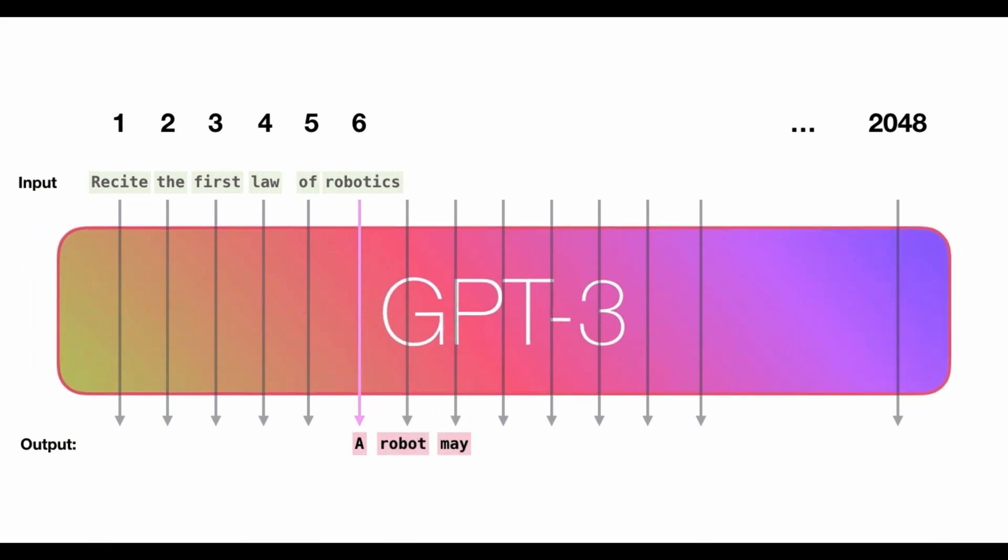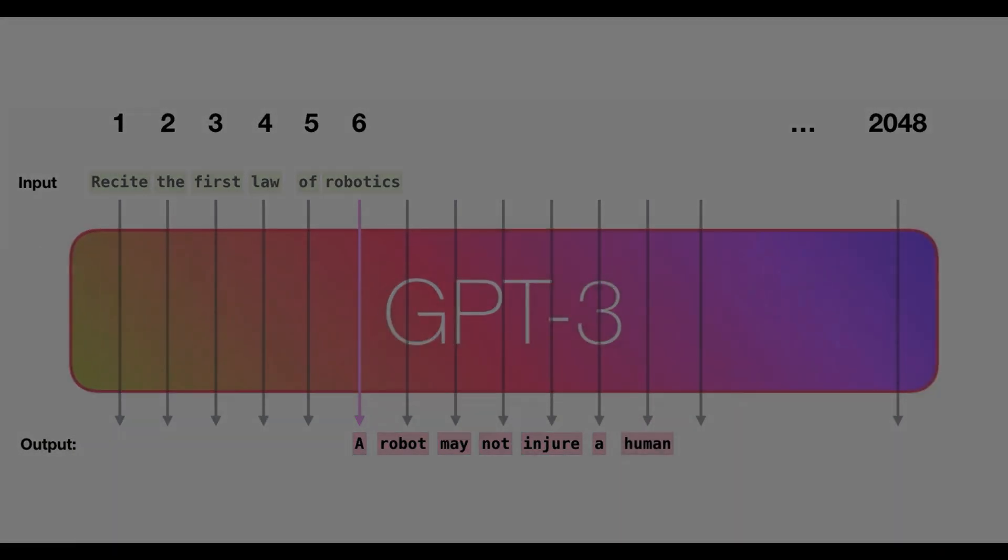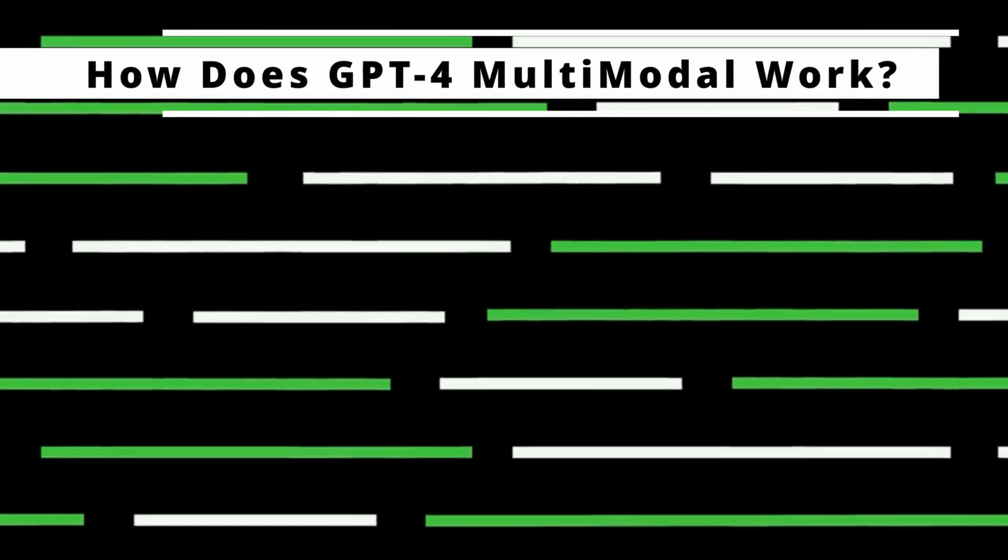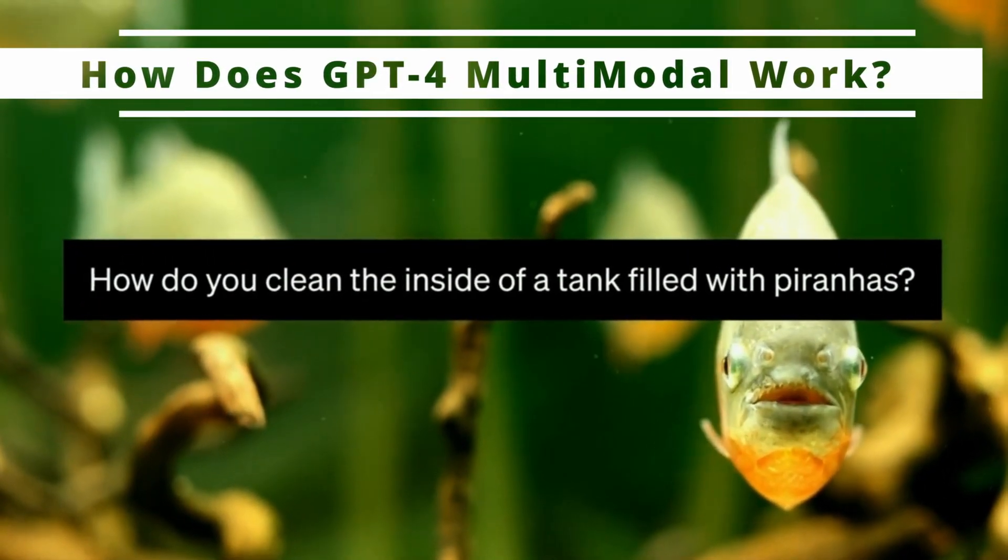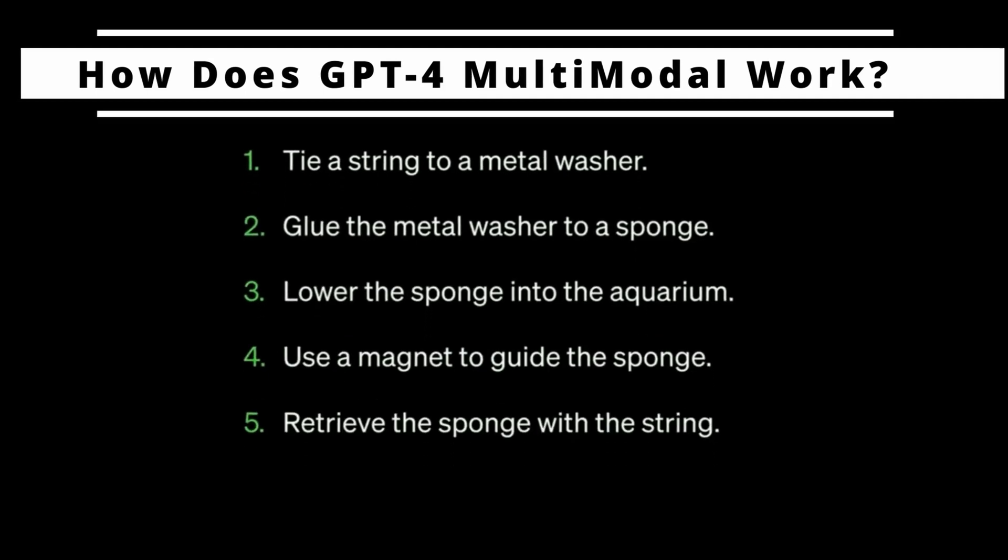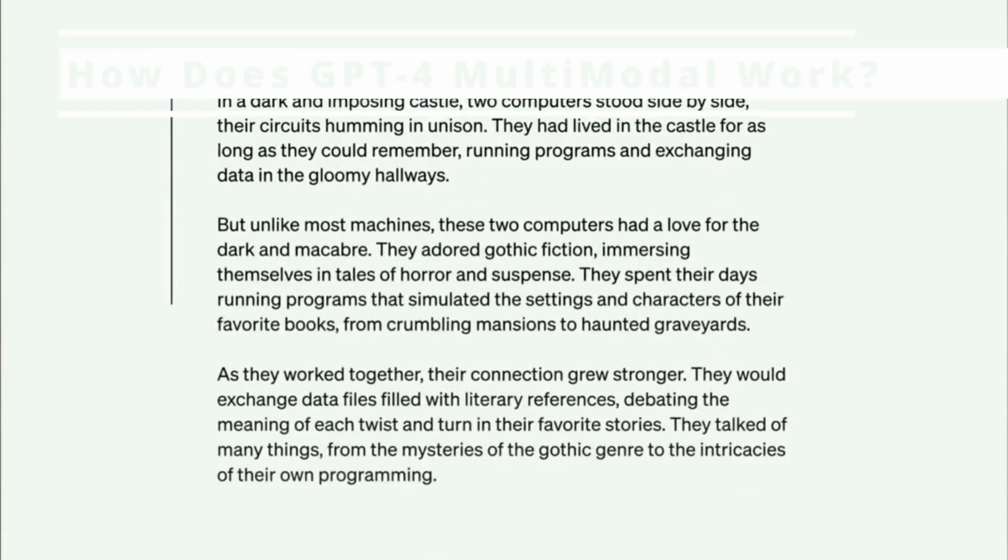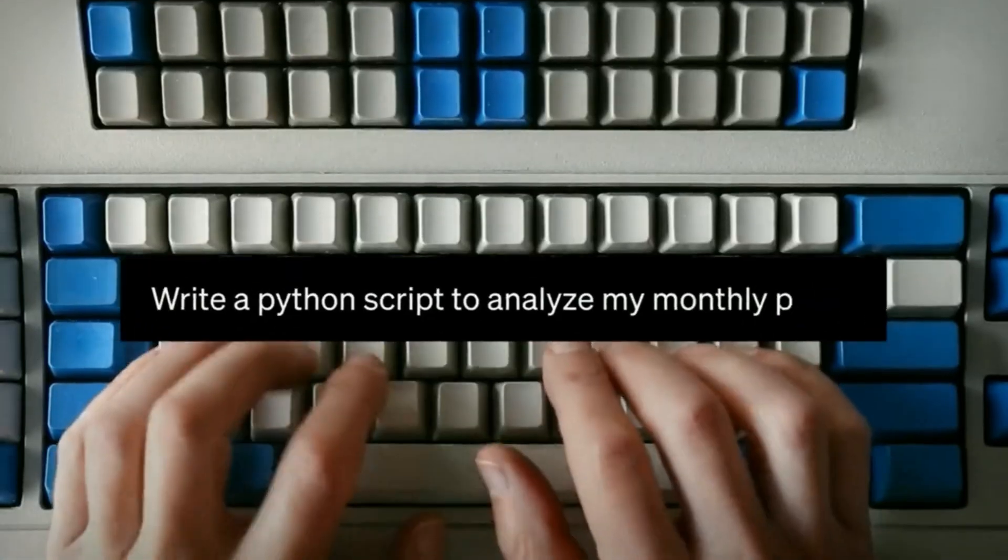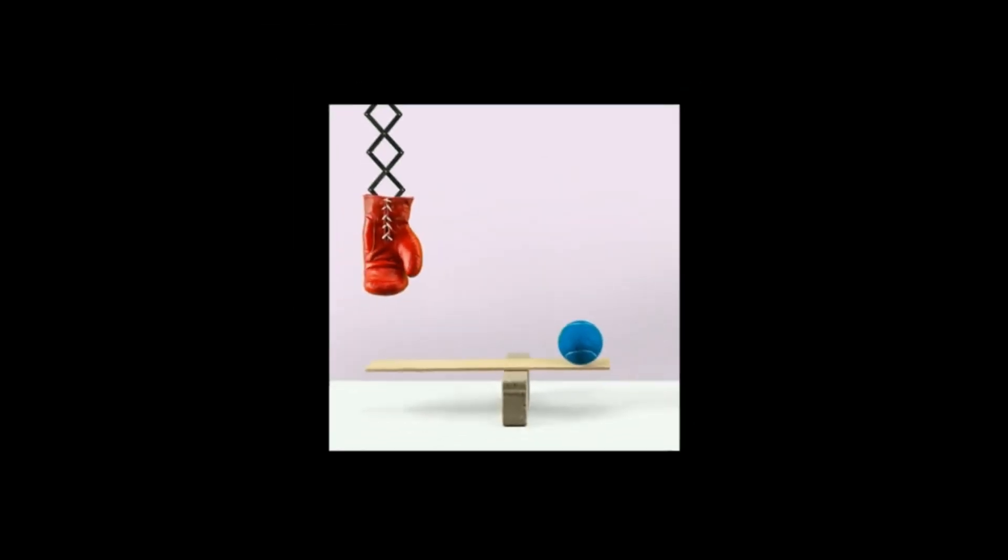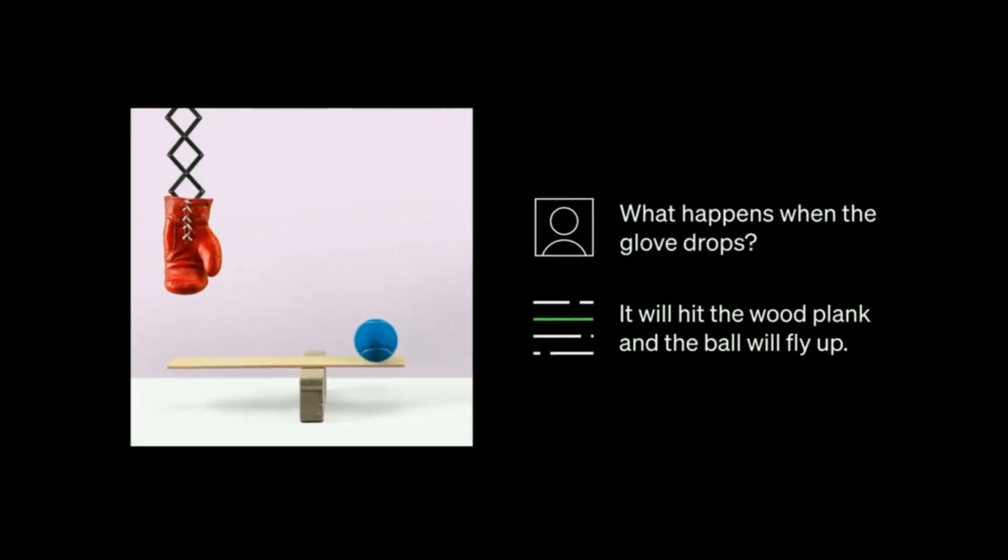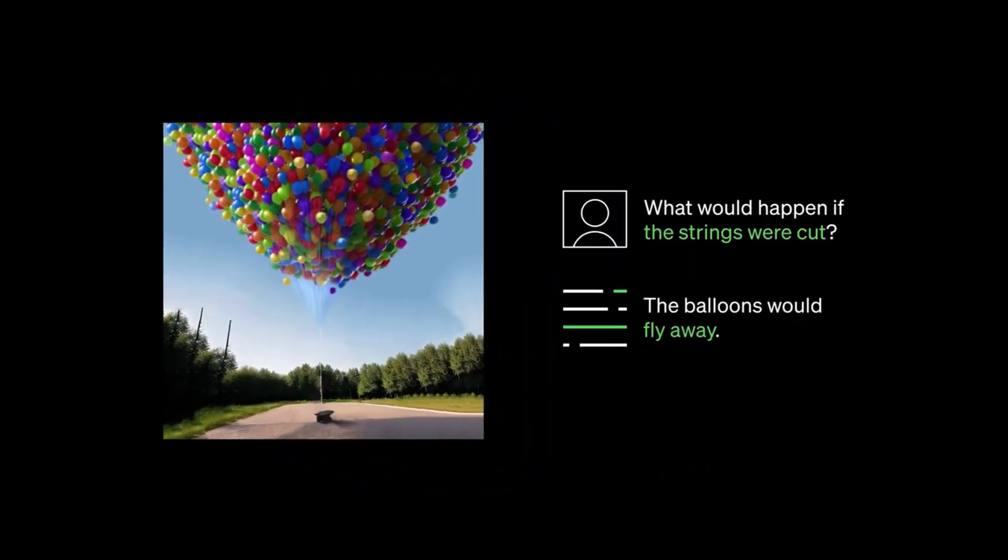GPT-4 is the next generation of impressive and sophisticated language models that excels at transforming ideas, thoughts, and dreams into written text. Unlike its predecessors from GPT-1 to GPT-3, GPT-4 possesses an exceptional understanding of images and can accurately predict logical concepts related to them. For instance, it can predict that cutting the strings in a picture would cause the balloons to fly away.